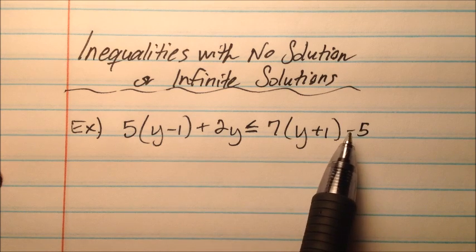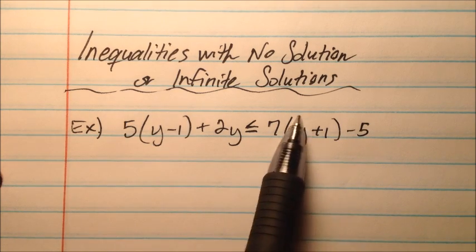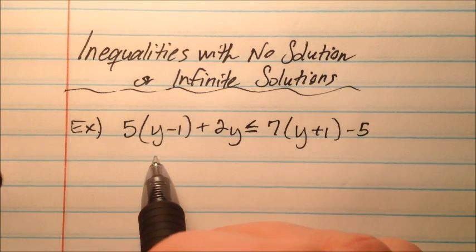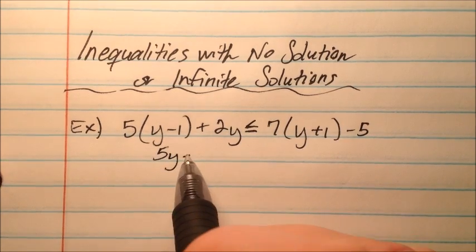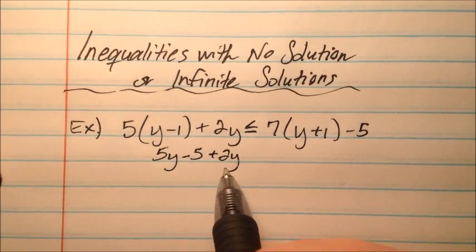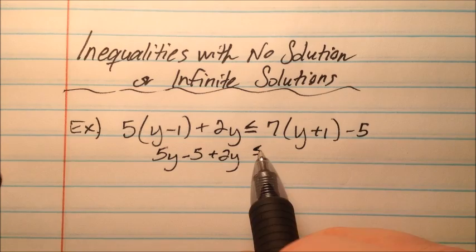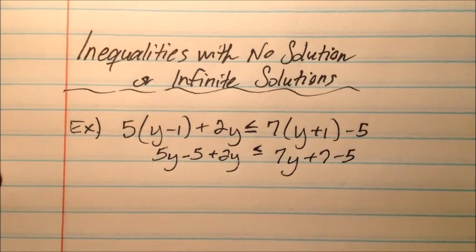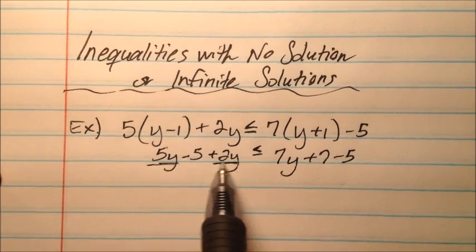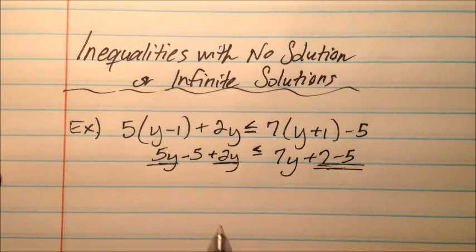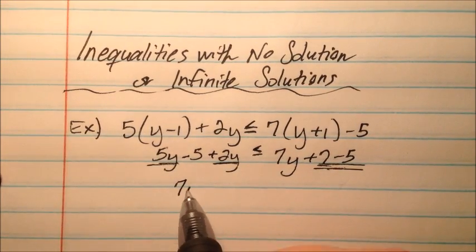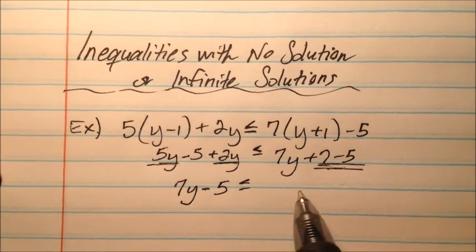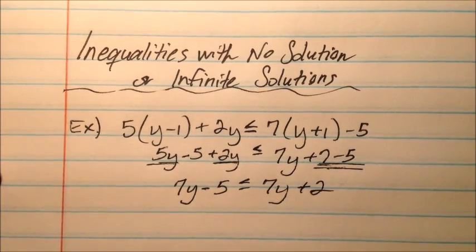So we have this first inequality. I'm going to go ahead and distribute and then combine like terms. So 5y minus 5 plus 2y is less than or equal to 7y plus 7 minus 5. So I'm going to focus on combining like terms. So 5 plus 2y is 7y minus 5 less than or equal to 7y plus 2.